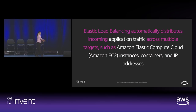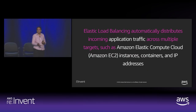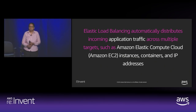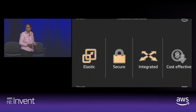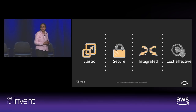So what is Elastic Load Balancing? Elastic Load Balancing automatically distributes your application traffic to multiple targets. The targets we support today are EC2 instances, containers, and IP addresses. Let's briefly look at some of the advantages of using Elastic Load Balancing.